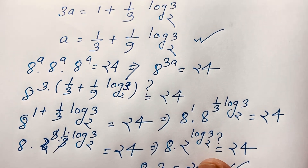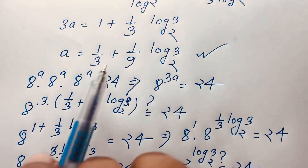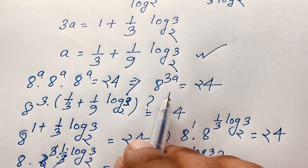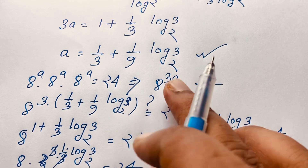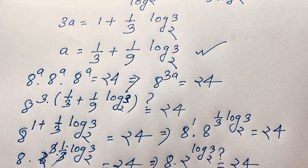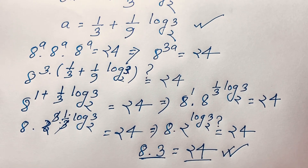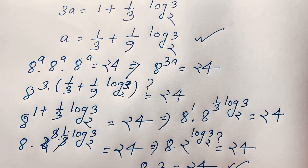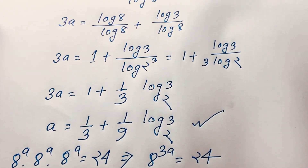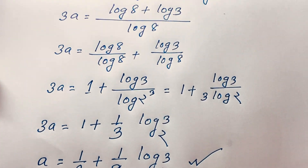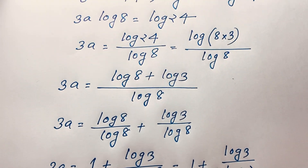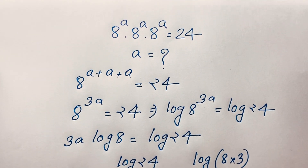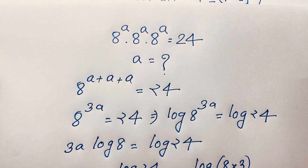So our final answer is A equals one-third plus one-ninth log 3 base 2. This is the value of A in this exponential math problem. Thank you all. If you enjoyed this video, please subscribe to my channel for other interesting videos. Goodbye, take care.